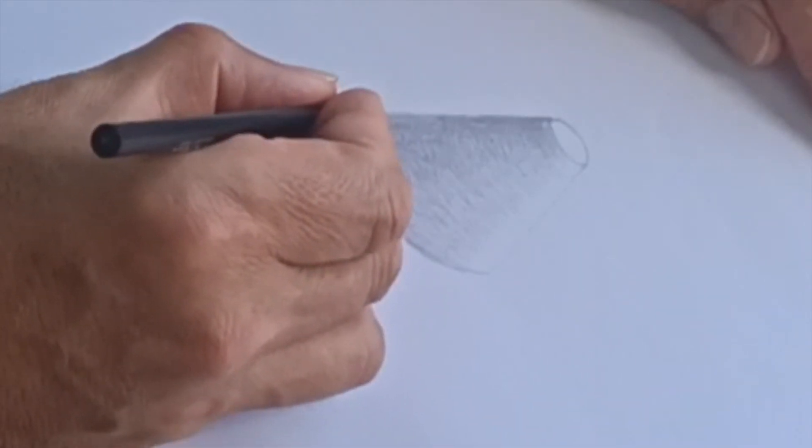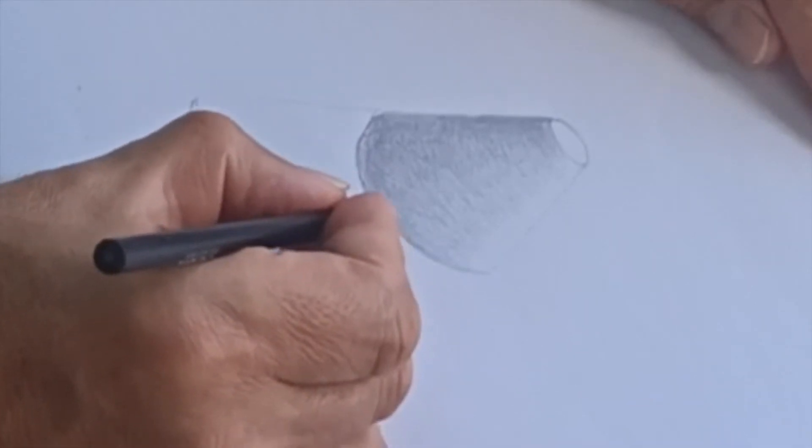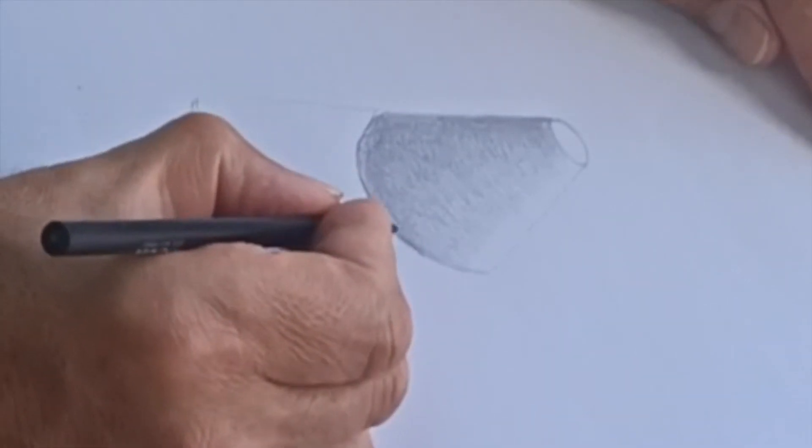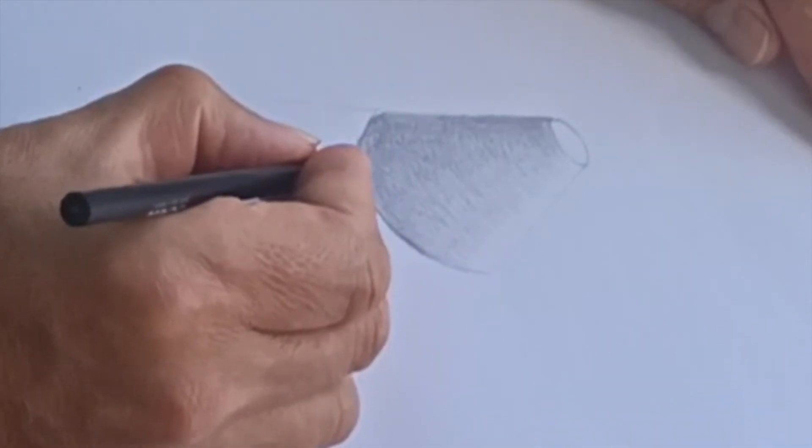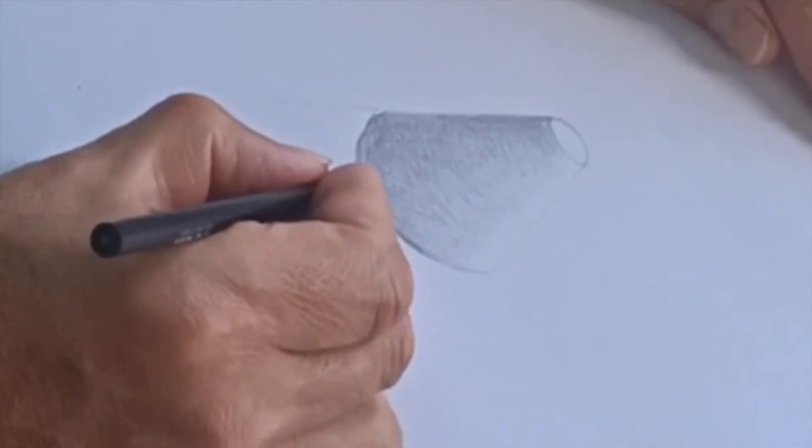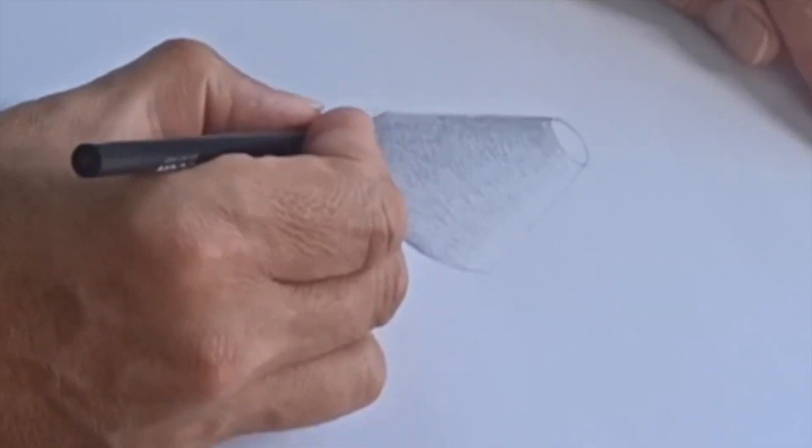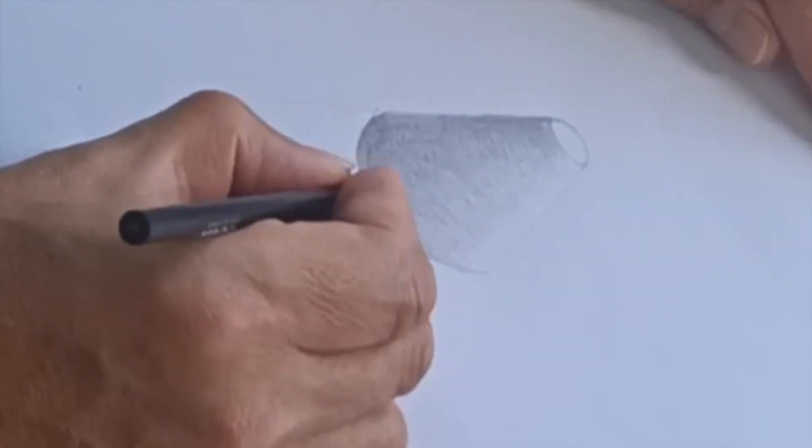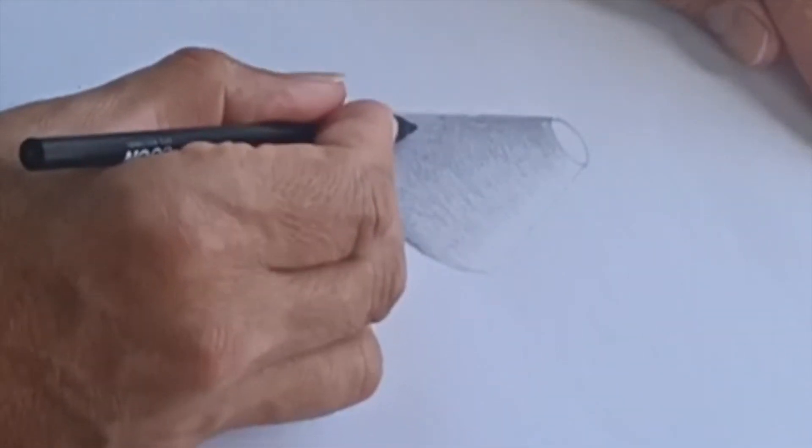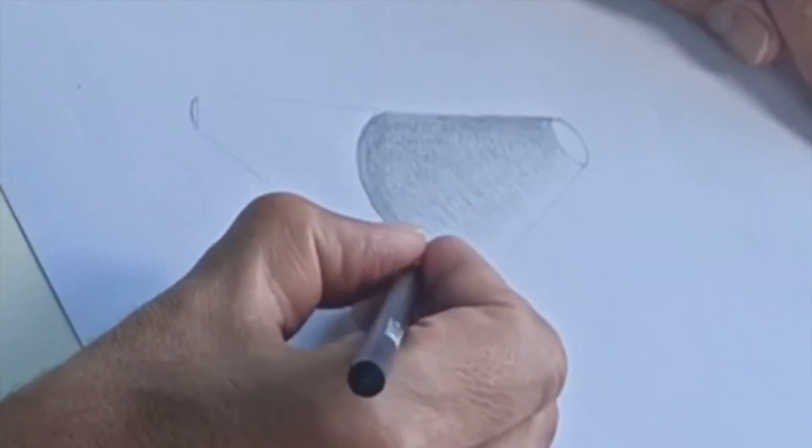Now, a little dark line around the bottom here. Give myself some shape here. Yeah, it's looking a little better.